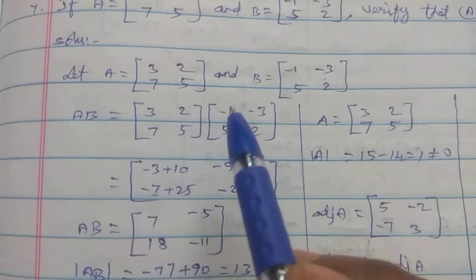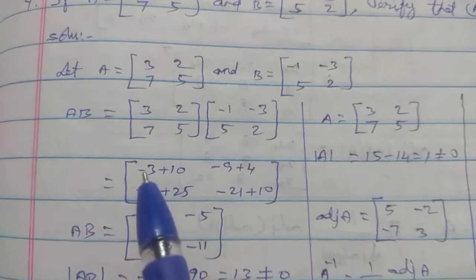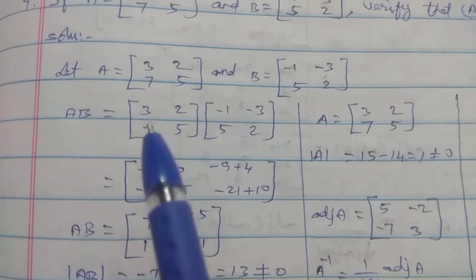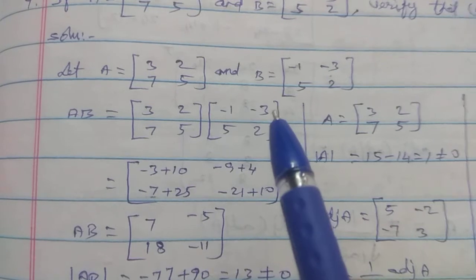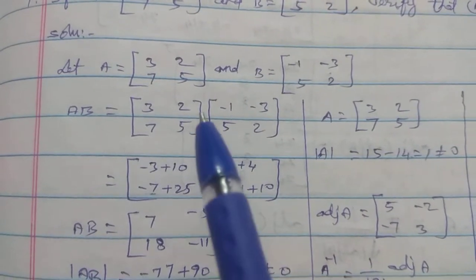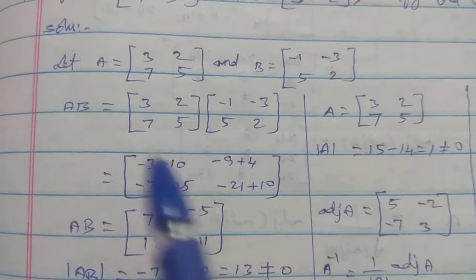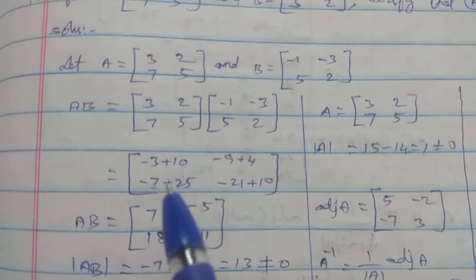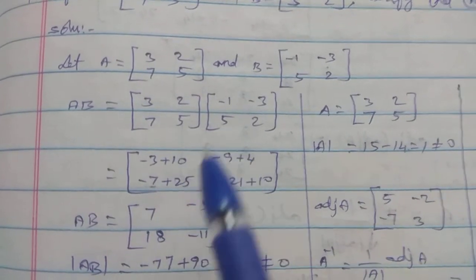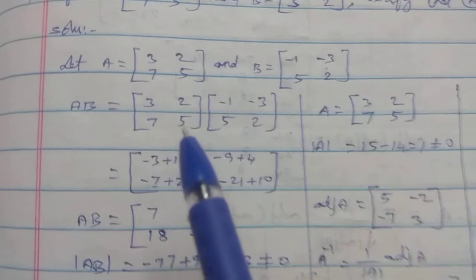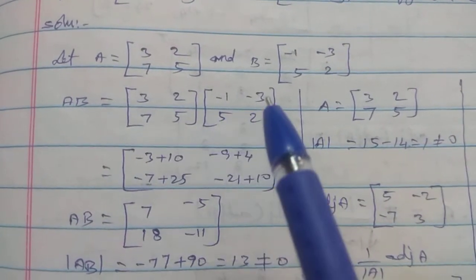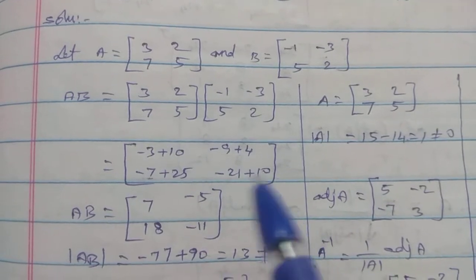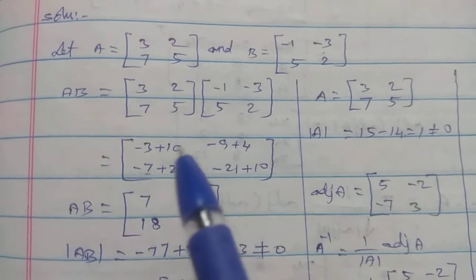First row into first column: 3 into minus 1 is minus 3, plus 2 into 5 is plus 10. First row second column: 3 into minus 3 is minus 9, plus 2 into 2 is plus 4. Second row first column: 7 into minus 1 is minus 7, plus 5 into 5 is 25.